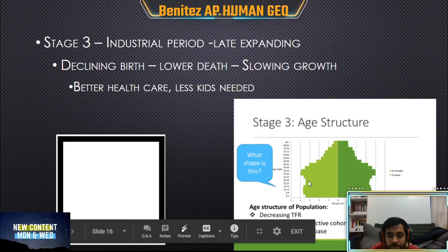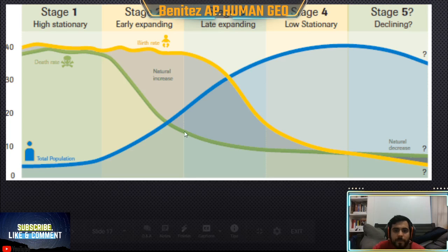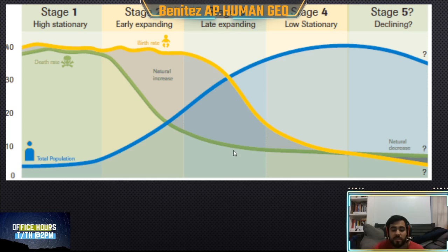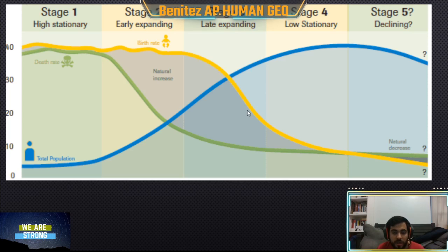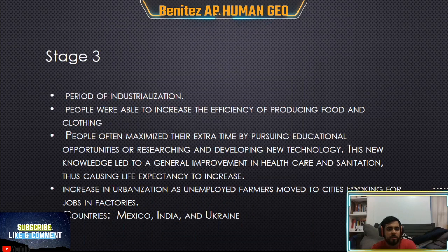In stage three, we have about the same number of kids and adults — the pyramid is beginning to square up. Looking at the Demographic Transition Model graph for stage three: the death rate is going down because healthcare is better and there are more machines to take better care of people. But also the birth rate is beginning to decrease, because women are starting to work, receiving education, and gaining access to birth control — meaning they have the option to pursue a career instead. Examples of countries in stage three include Mexico, India, and Ukraine.